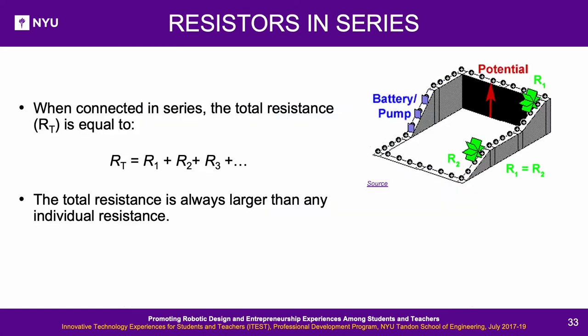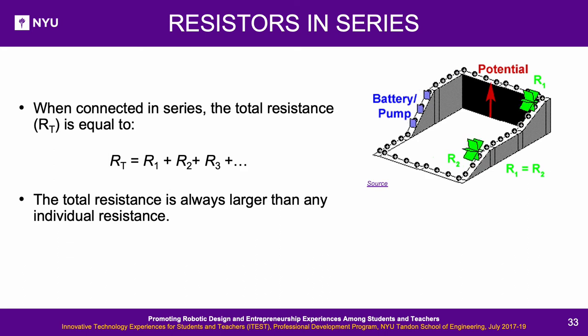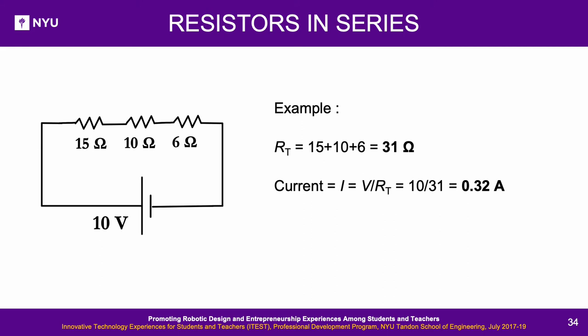Resistors in series: When resistors are connected in series, the total resistance adds up. The total voltage supplied equals the sum of individual voltage drops, and current is the same in each resistor since there is no other path of lesser resistance. The total resistance of the series circuit is just the sum of individual resistors — total resistance increases. For example, current flowing through all three resistors is the same (0.32 amps), but the voltage drop across each resistor differs — the voltage drop across a 15-ohm resistor is 0.32 × 15 = 4.8 volts.